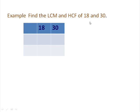Now next example: find the LCM and HCF of 18 and 30. Again, we will find both LCM and HCF of 18 and 30 by the common factorization method. Since 18 and 30 are both even numbers, we take 2 as a prime factor. Divide 18 by 2 to get 9, write 9 below 18. Divide 30 by 2 to get 15, write it below 30.